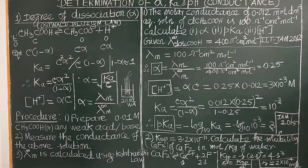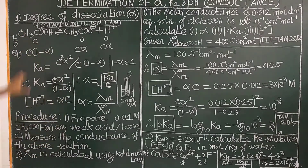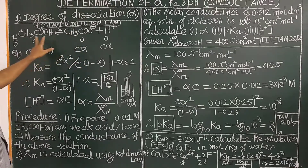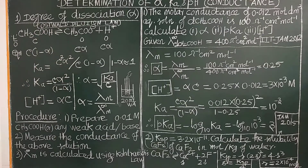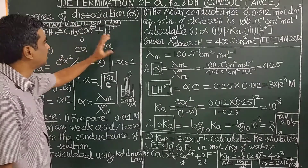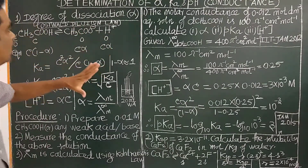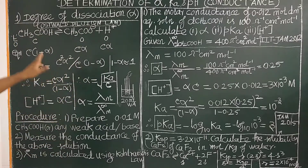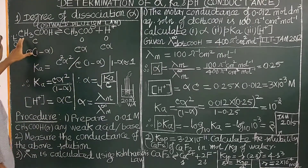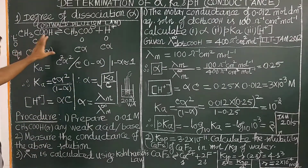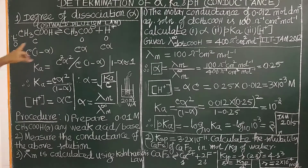For example, consider a weak acid. If you consider a weak base, ammonium hydroxide — acetic acid is a weak electrolyte. It undergoes partial ionization, partial dissociation. At concentration C, initially, we will consider C moles per liter.